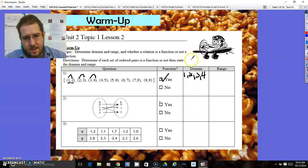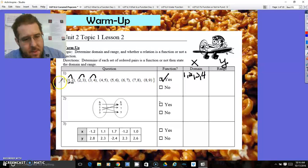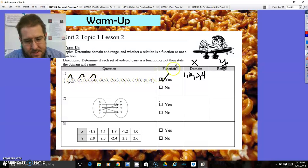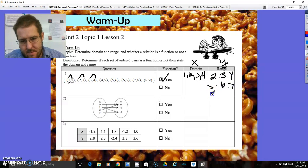The ranges are just a list of all the possible y's. These are all the x's, these are all the y's. If the domains are one, two, three, four, five, six, because they came first, then the ranges are two, three, four, five, six, seven, eight, nine.